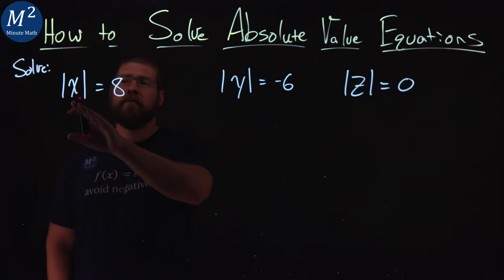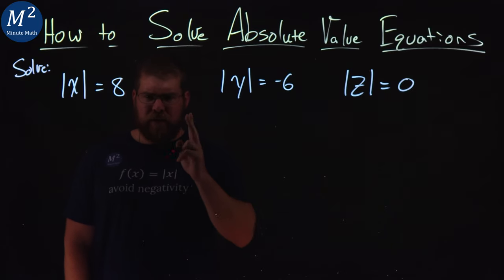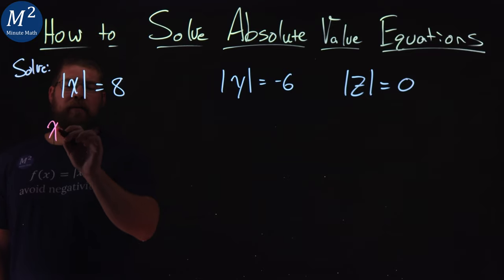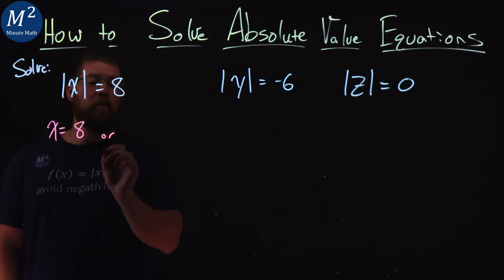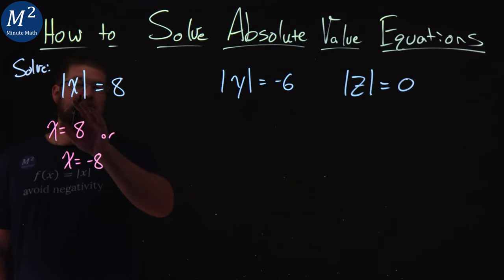The first one is: what value, when we take the absolute value of it, distance from zero, is equal to eight? There's going to be two values here. X can equal positive eight, or X can equal negative eight. Those are two values that when we take the absolute value of, we get eight.